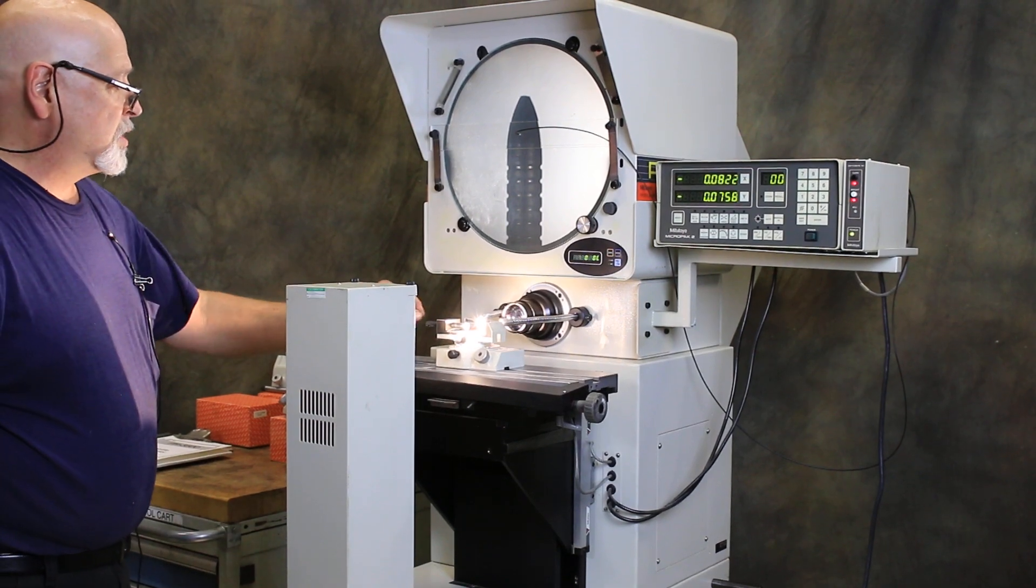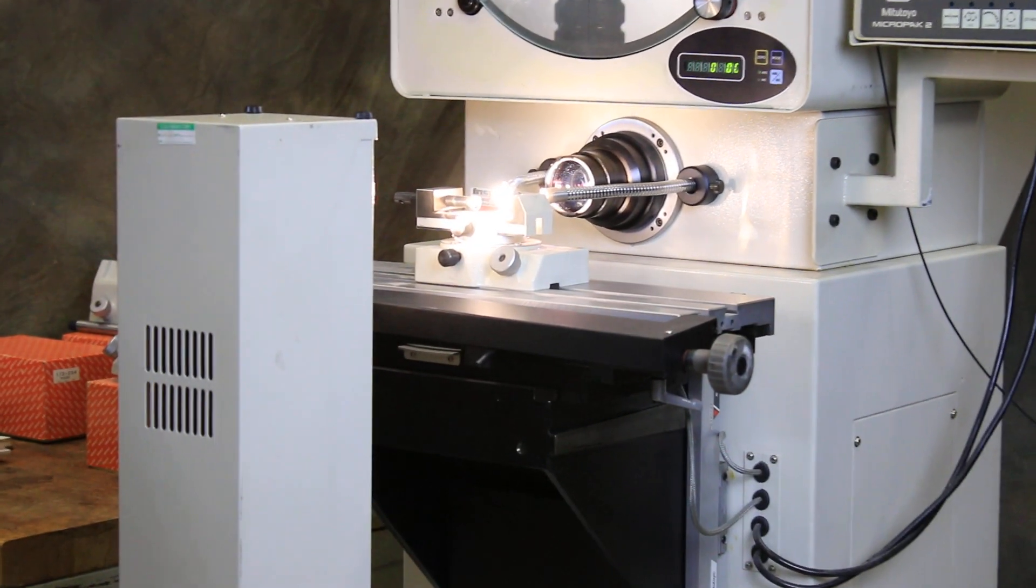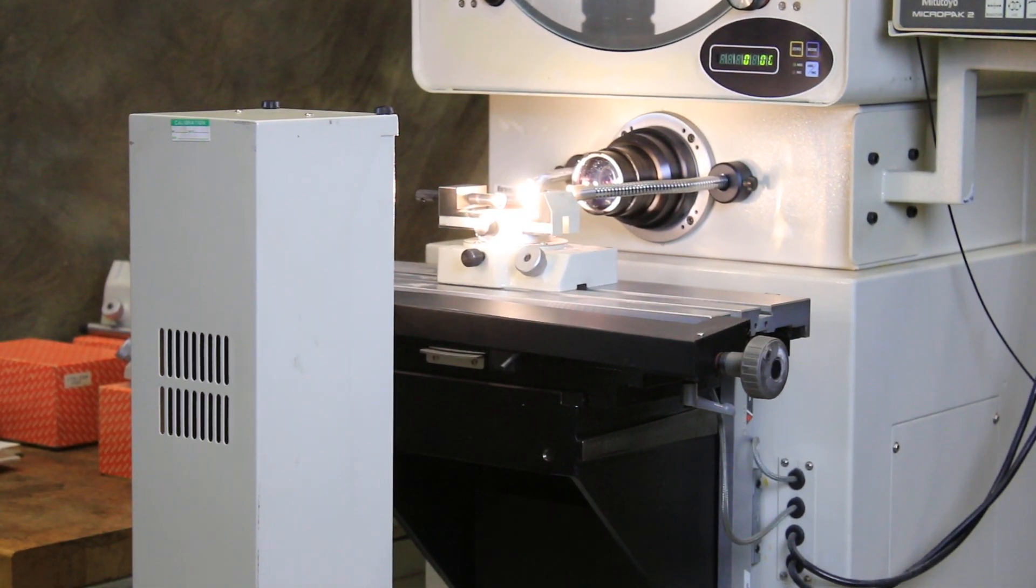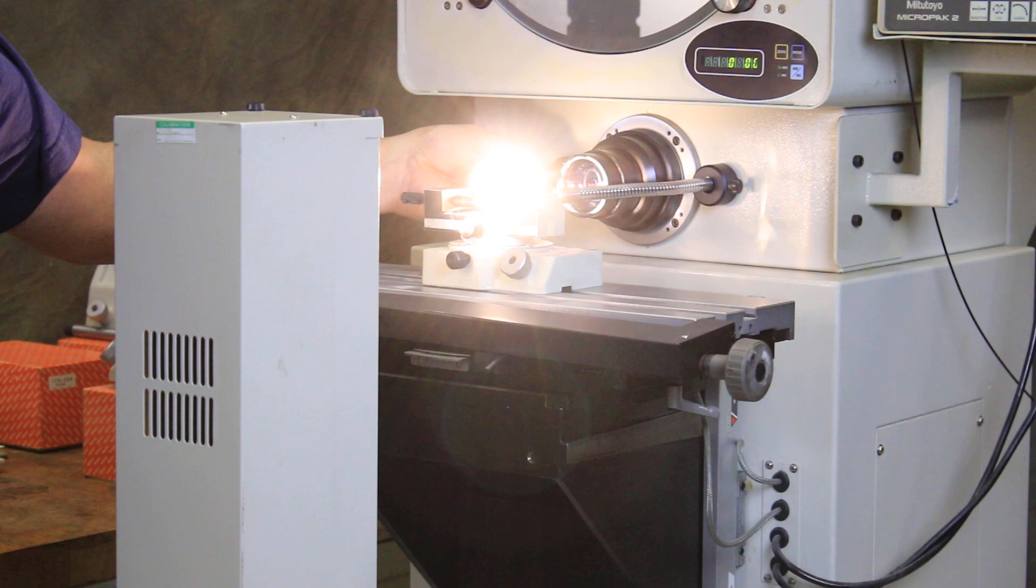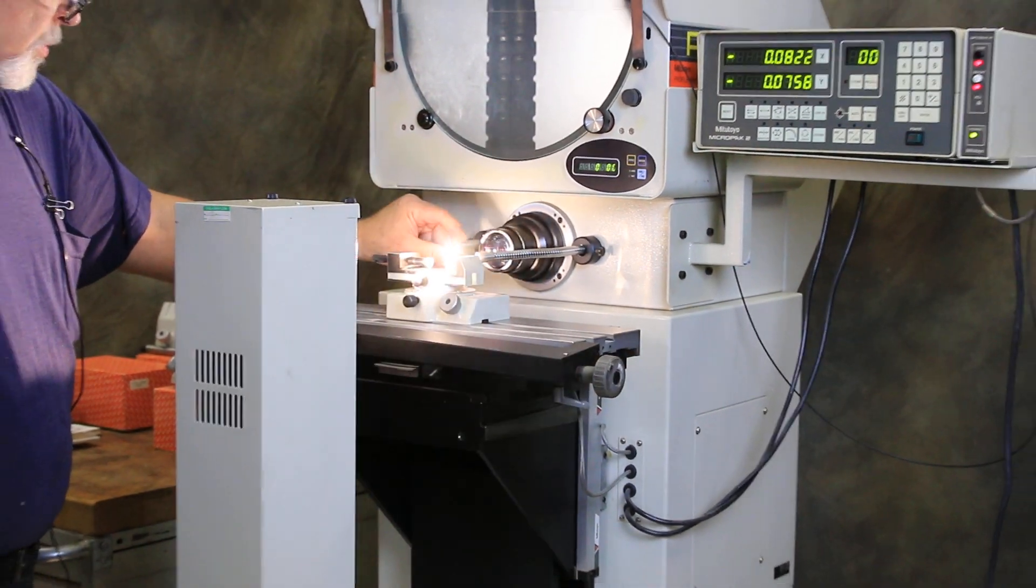And mounted on the table is a little rotary clamping vise. You could put your part in there. And these fiber optic cables are adjustable. They slide in, they slide out. You can move them around to light up your part better.